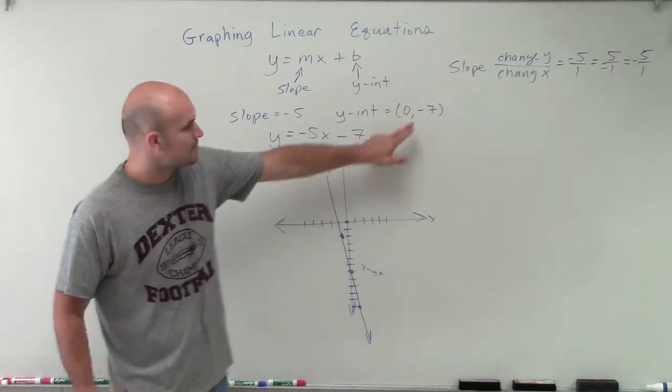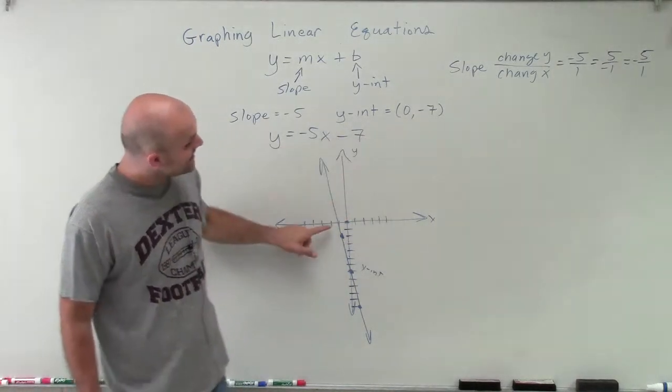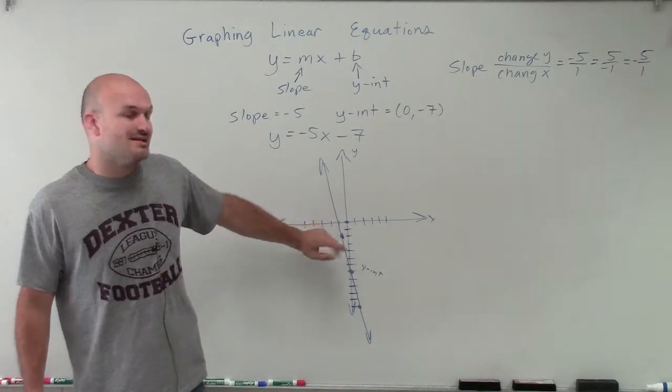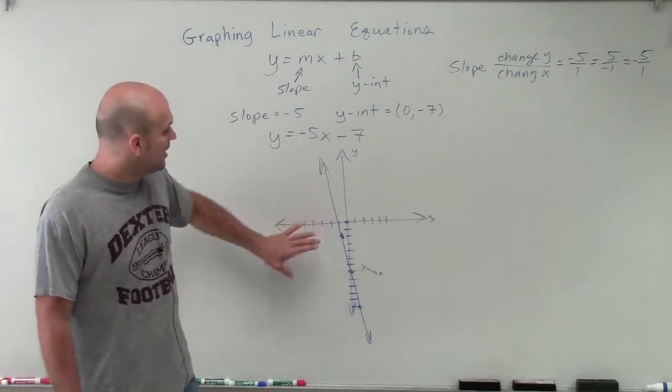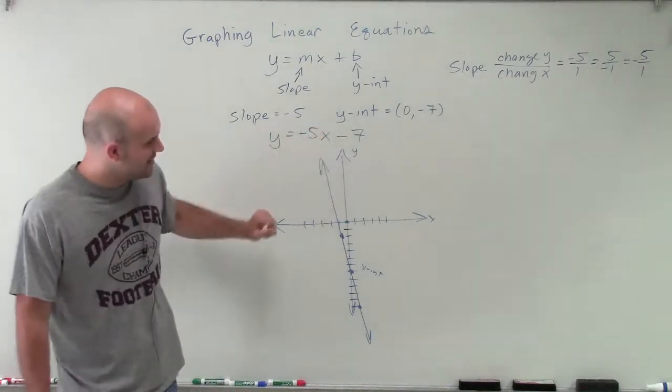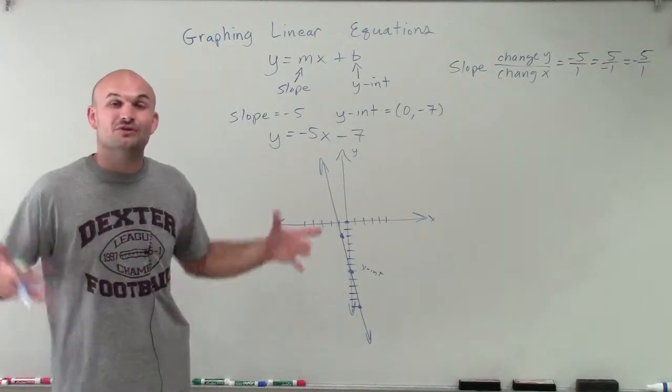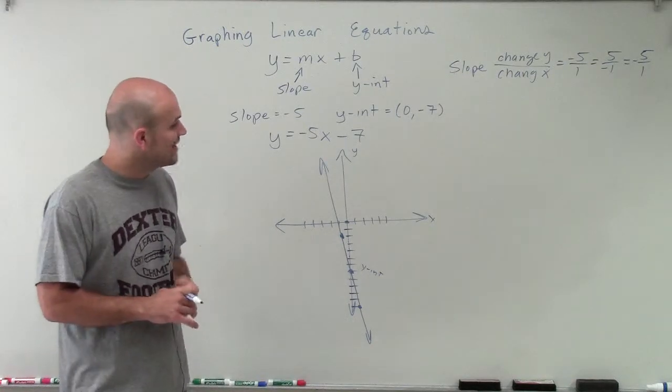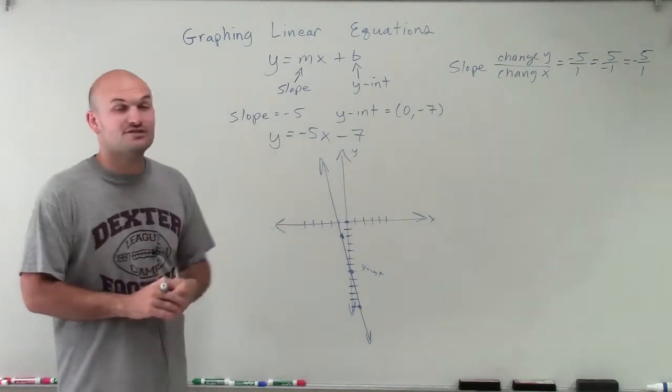Now we can see our y-intercept we know is at 0 comma negative 7. It looks like our x-intercept's at negative 1, 0. But it's not exactly there. But it's pretty close. And we'll learn how to find that exact value. Coming up to here, you can see that this is a linear equation. So there is going to be no maximum or minimum values. They're going to go up to infinity and down to infinity.